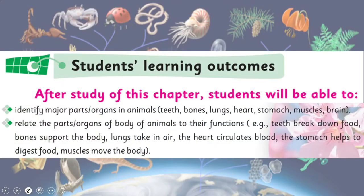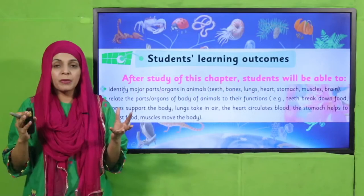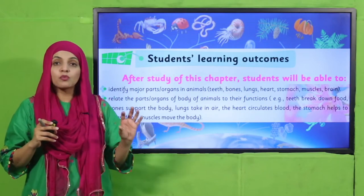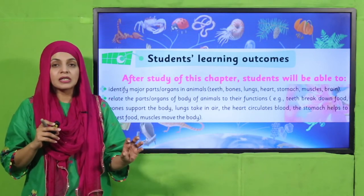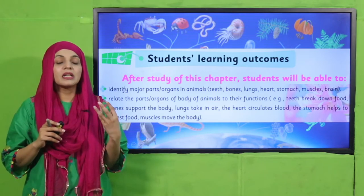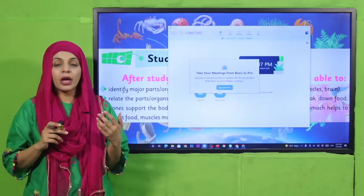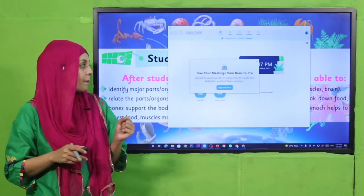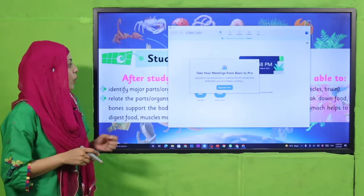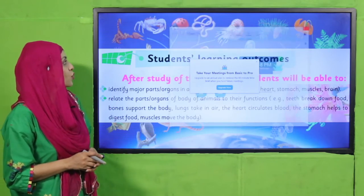All vertebrates have a brain, but it varies. Human beings have a highly developed brain, whereas smaller vertebrates have a less developed brain.